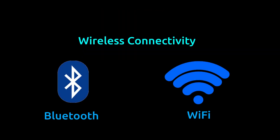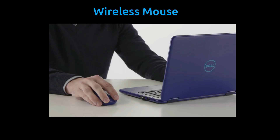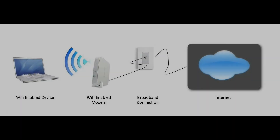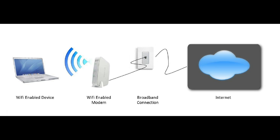Not only wired, but there are wireless ways of connecting devices to a computer. Mouse and keyboard can be connected to the computer using Bluetooth. Using Bluetooth, data can be shared with nearby devices, and it can also be used to connect two computers. Internet connectivity can be obtained using Wi-Fi without any connecting cables.